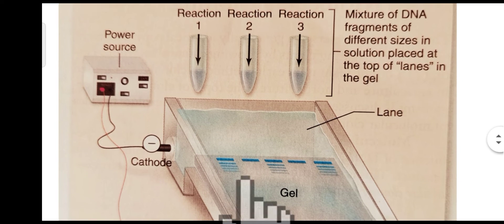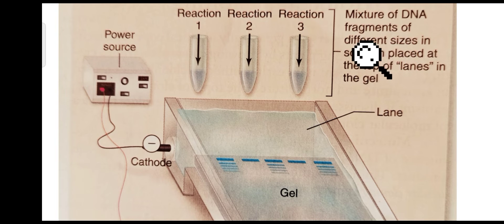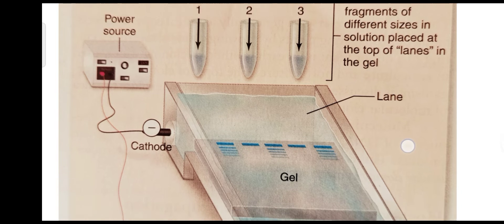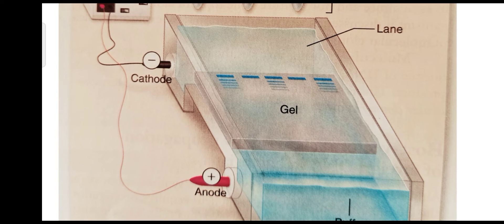اس diagram میں gel electrophoresis پوری طرح دکھائی گئی ہے۔ یہ mixture of DNA fragments of different sizes ہے جو solution میں lanes کے top پر رکھا گیا ہے۔ Power source کے ذریعے attach کیا ہوا ہے — cathode negative charge ہے، anode positive charge ہے۔ Molecules gel کے اندر separate ہو رہے ہیں۔